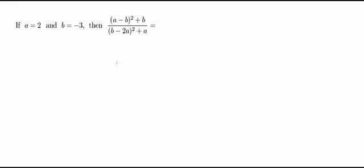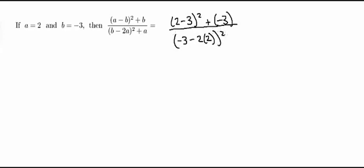I'm going to start out by plugging in my values. So in the numerator, I'm going to get 2 minus 3 squared plus a negative 3 over negative 3 minus 2 times 2, all of that squared, plus 2. So it's really important in this case to make sure that you plug everything in with parentheses so that you don't get any of your signs mixed up.